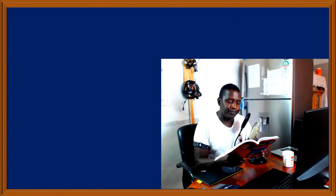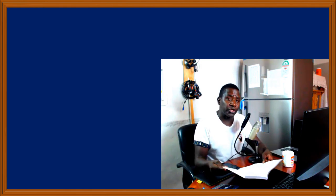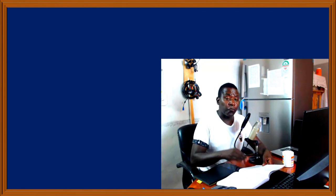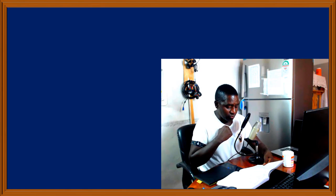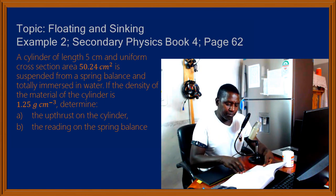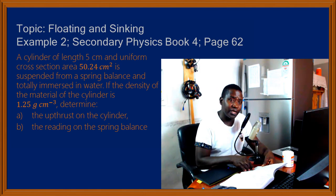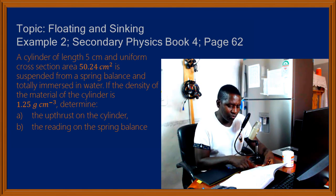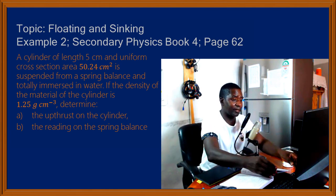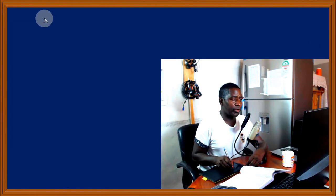Now let's look at Example 2. When solving questions or taking a lesson, always have a notebook, a calculator, and the course book so you can follow along. We are told that a cylinder of length 5 cm and uniform cross-section area of 50.24 cm² is suspended from a spring balance and totally immersed in water. The density of the cylinder material is 1.25 g per cm³.